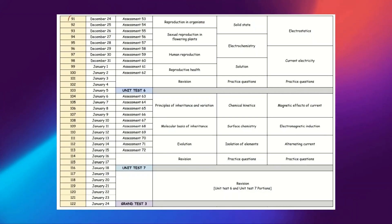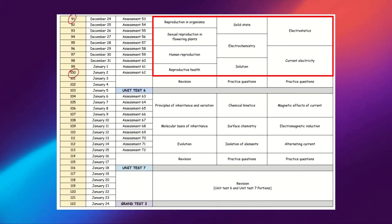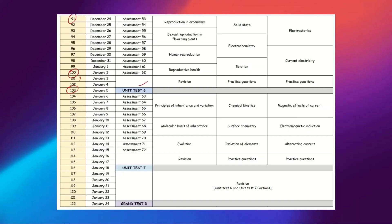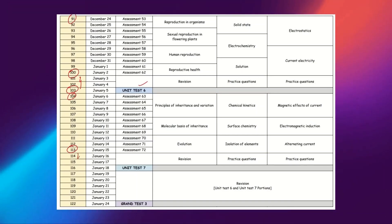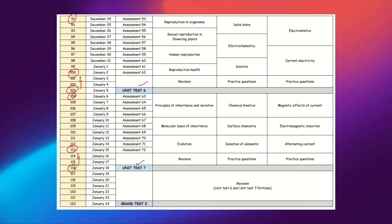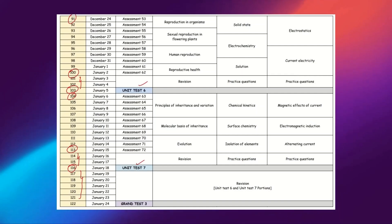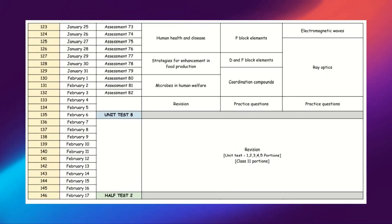Now moving on to Class 12 portions. From Day 91 to Day 100 you study Part 6 syllabus, then two days of revision, and you write Unit Test 6 on Day 103. From Day 104 to Day 113 you study Part 7 syllabus, two days of revision, and Unit Test 7 on Day 116. You then get five days to revise Parts 6 and 7 and write Grand Test 3 on Day 122. Now there is a little twist in the schedule, so please pay attention.